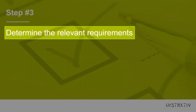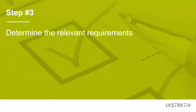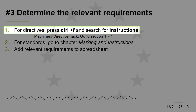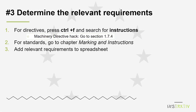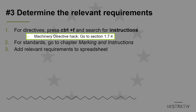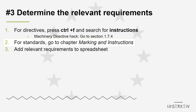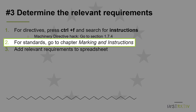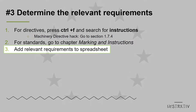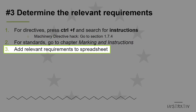In step 3 we're going to determine the relevant requirements. Open each directive that you've just saved and press Ctrl+F to search for 'instructions'. For the machinery directive you can go directly to section 1.7.4. For standards, go to the chapter 'marking and instructions'. Add all relevant requirements to the second column of your spreadsheet.